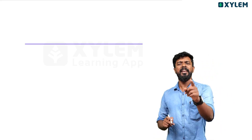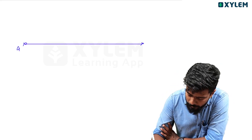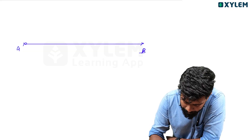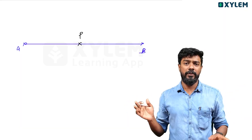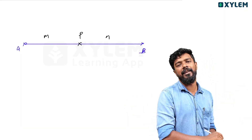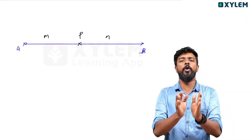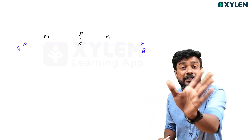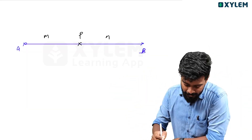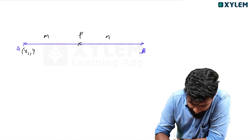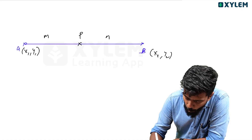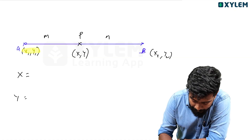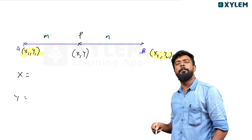Now let's discuss the section formula. We have a line with two endpoints A and B. There is a point P with coordinates (x, y) on this line segment, such that P divides A and B in the ratio M to N. We need to find the coordinates of P.